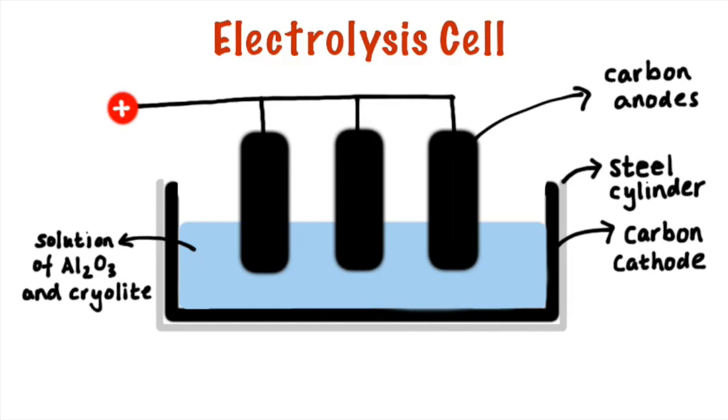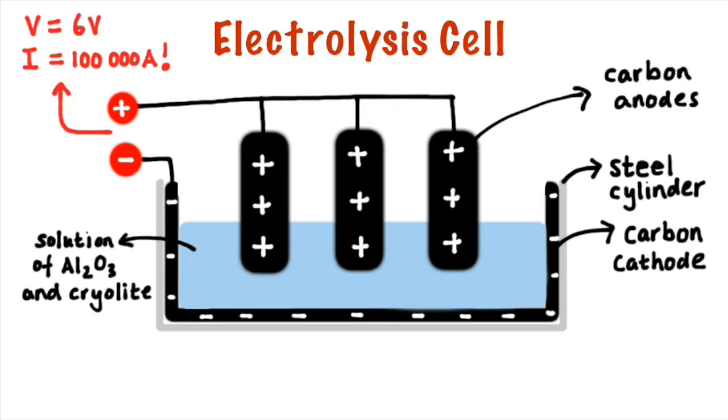Those carbon anodes are connected to the positive end of the electricity supply which makes them positively charged and the carbon cathode is connected to the negative end and that makes the carbon cathode negatively charged. Now the electricity supply runs at a voltage of 6 volts and have a look at that, an incredible 100,000 amperes, an enormous amount of electricity and that high electricity flow results in an operating temperature of around 1000 degrees Celsius.